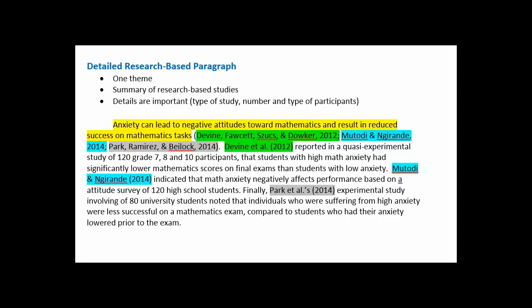I'm going to talk about the detailed research-based paragraph in an academic paper or a thesis. This kind of paragraph has one theme, and that theme is clearly stated in the first sentence — something like 'anxiety can lead to negative attitudes towards mathematics and result in reduced success on mathematics tasks.' Immediately after, several authors are cited, and those are the authors that will be discussed in this paragraph.